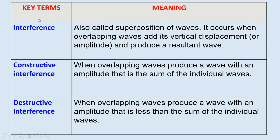The key terms learned in this lesson are: interference — also called superposition of waves — which occurs when overlapping waves add their vertical displacement and produce a resultant wave; constructive interference — when overlapping waves produce a wave with amplitude that is the sum of the individual waves; and destructive interference. We can apply both constructive and destructive interference on the same wave when adding two waves. This is the lesson about interference — thanks for watching.